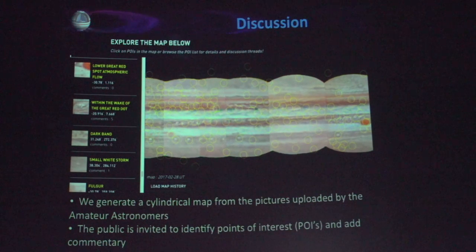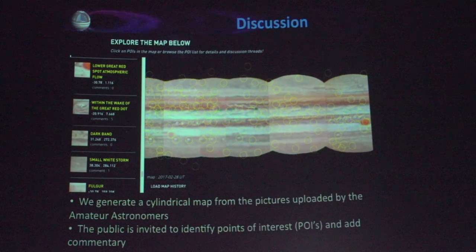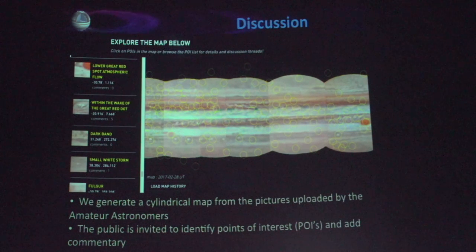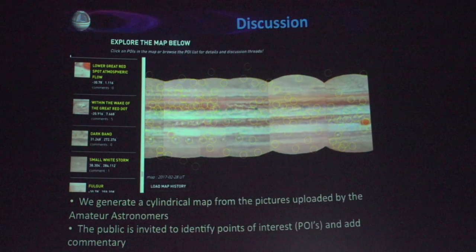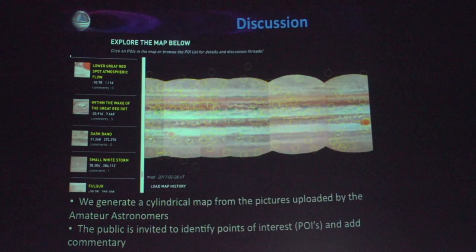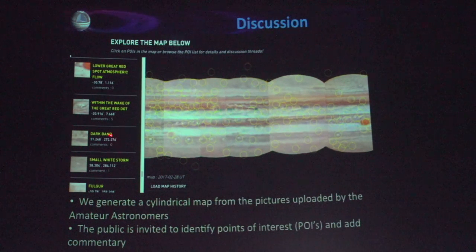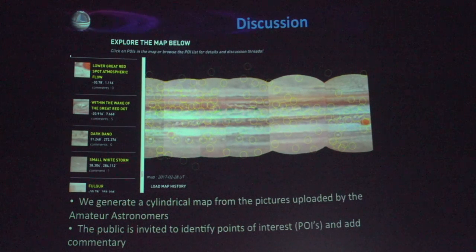Then we invite the public to say: what do you find interesting? Is there an interesting storm? Is it an eddy along the belt-zone interface? What do you like, and tell us why we should take a high-resolution, close-up picture of your point of interest? The person, whoever they are, gets to name their target, their point of interest. So like this particular one — they like 'dark band, small white storm.' There are some very creative names.